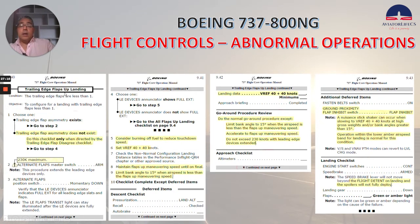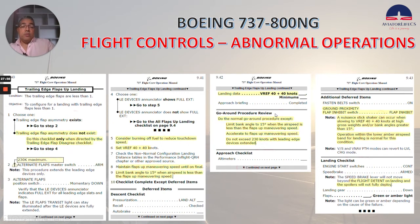Trailing edge flaps-up landing non-normal checklist: choose one — trailing edge flap asymmetry does not exist. Do this checklist only when directed by the trailing edge flap disagree checklist. Many of the comments we have read before in the different checklists reviewed. Go-around procedure: do the normal go-around procedure except limit bank angle to 15 degrees when airspeed is less than flap sub maneuvering speed. Accelerate to flap sub maneuvering speed. Do not exceed 230 knots with leading edge devices extended. You guys can finish reading the rest of the checklist.